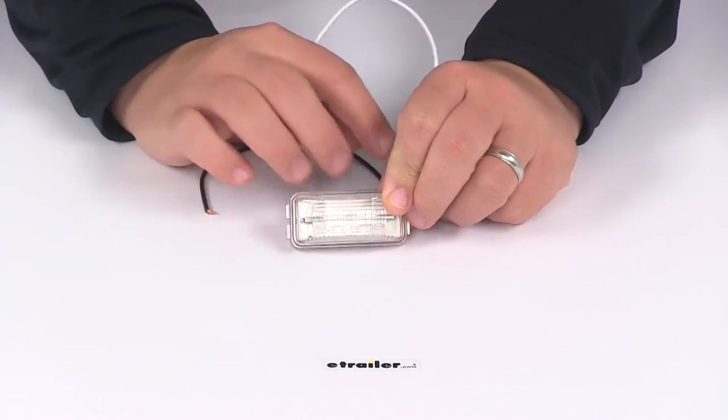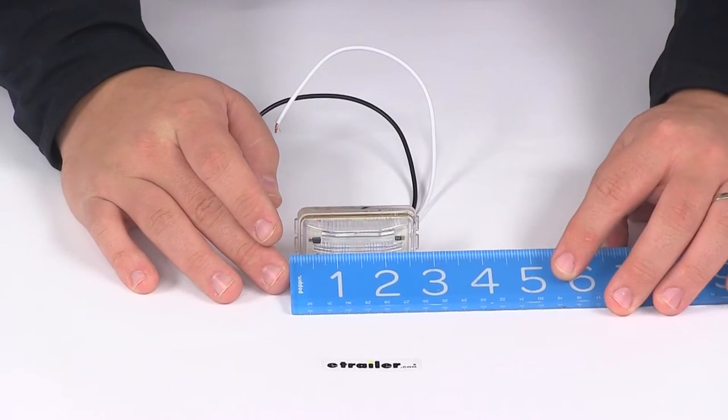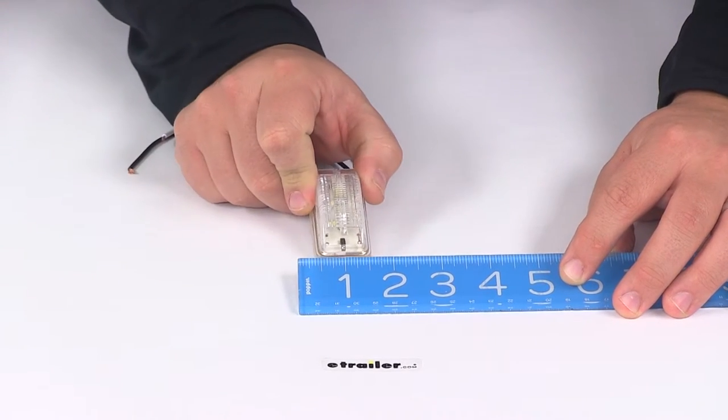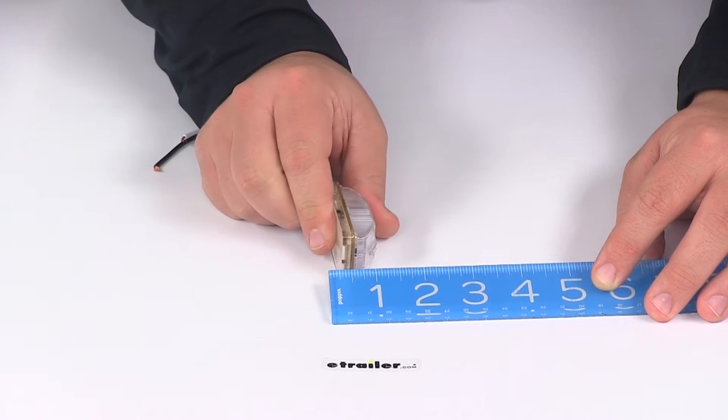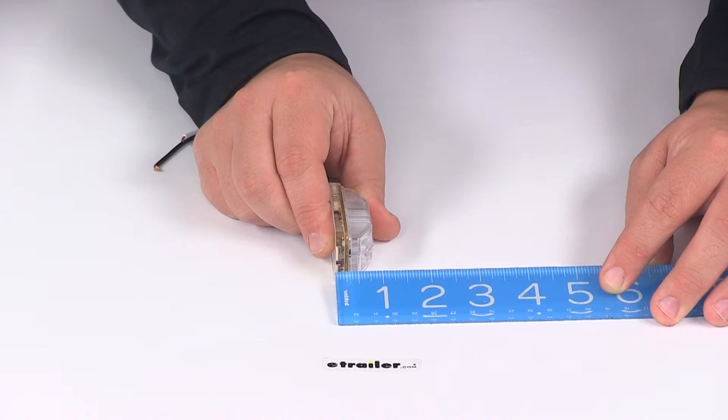A few measurements to go over with you real quick. Starting with the overall length, measuring from edge to edge, it's going to give a measurement of about two and a half inches. Overall width is going to give us a measurement of an inch and a quarter. And then the overall depth or thickness is going to measure 13/16ths of an inch.